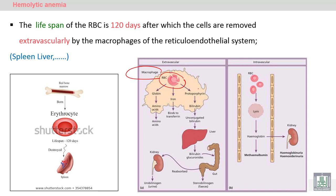Extravascular destruction of aged red cells leads to release of heme. Heme releases iron and protoporphyrin. Iron is used for recycling of new heme via transferrin, while protoporphyrin is converted to bilirubin. Bilirubin is conjugated in the liver to be excreted in the stool as stercobilinogen or in the urine as urobilinogen.